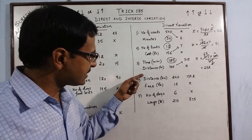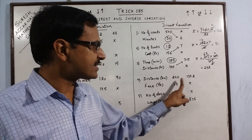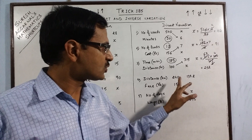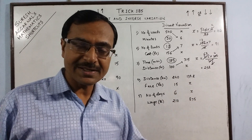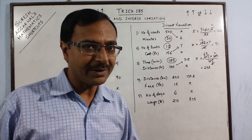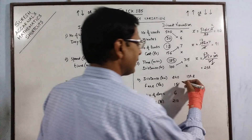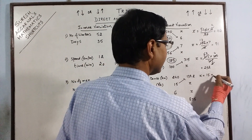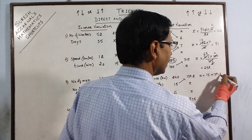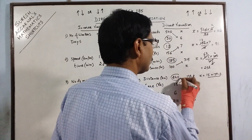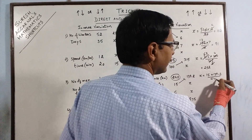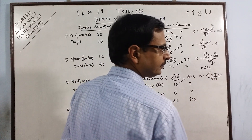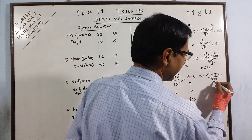Likewise for distance and fare: when the distance decreases, obviously you have to pay less fare, so both are decreasing simultaneously — again direct variation. Multiply x equals 15 into 139.2, divided by the known value 240.